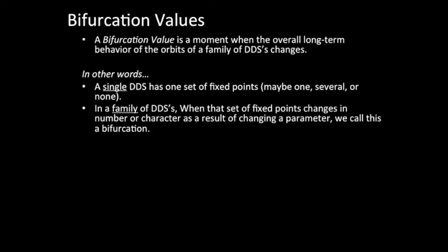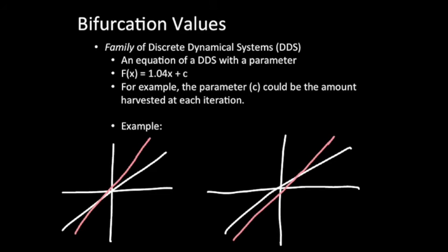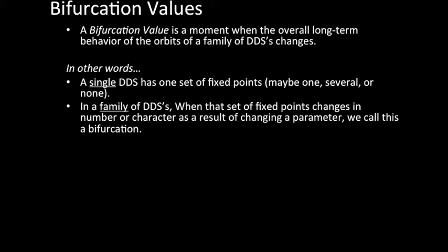If we were to look at those two different examples that we saw in an earlier slide, if the long-term behavior of an orbit changed when we changed how much we were harvesting, we would call that a bifurcation value. But we haven't actually seen one yet, so let's move on.